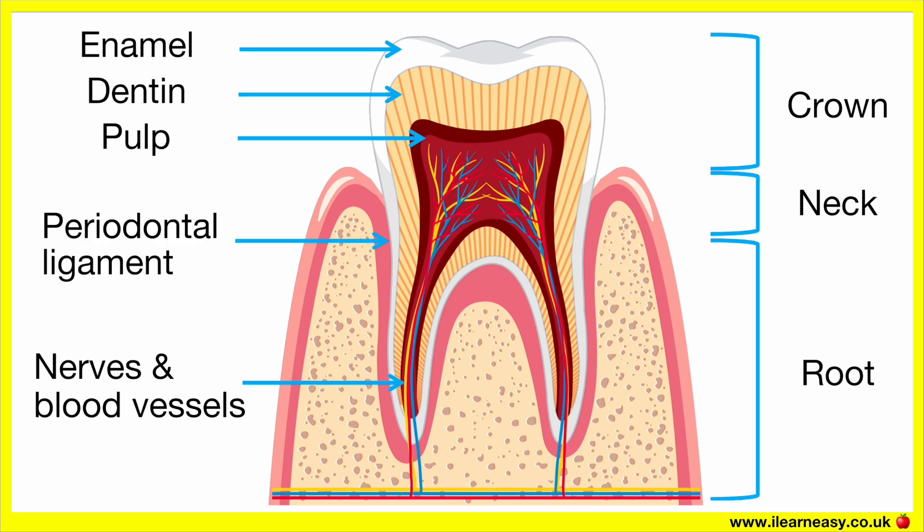Periodontal ligament. The periodontal ligament is a network of fibers that connects the tooth's root to the surrounding bone. The ligament holds the tooth in place and helps absorb the forces generated during chewing and biting.